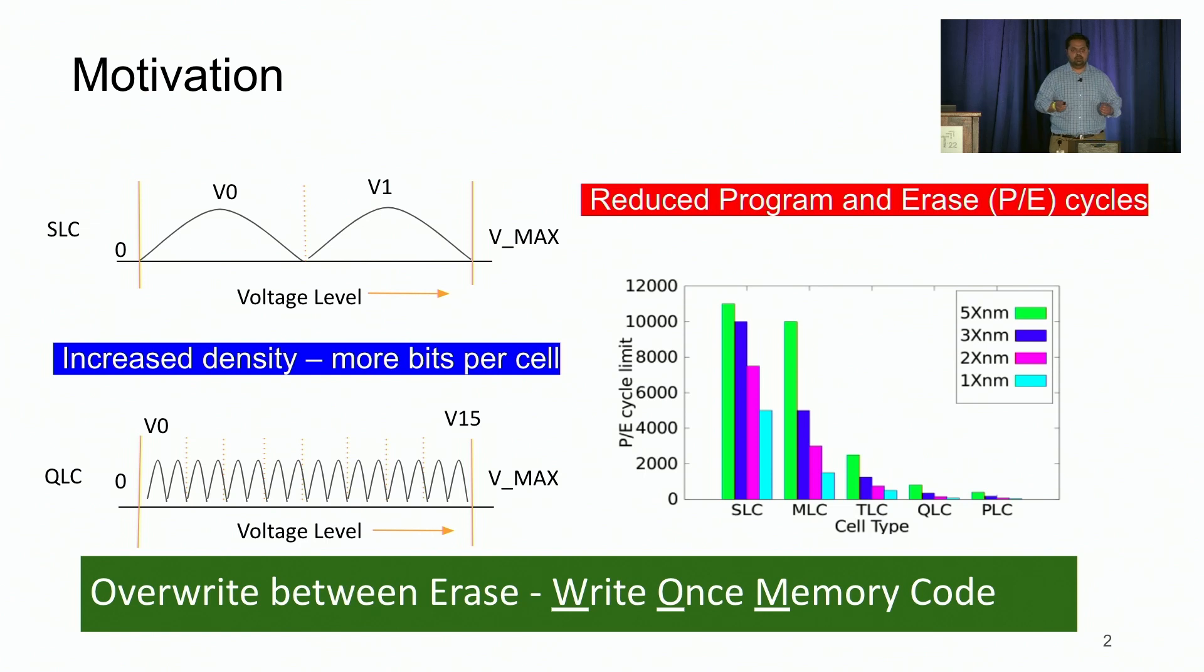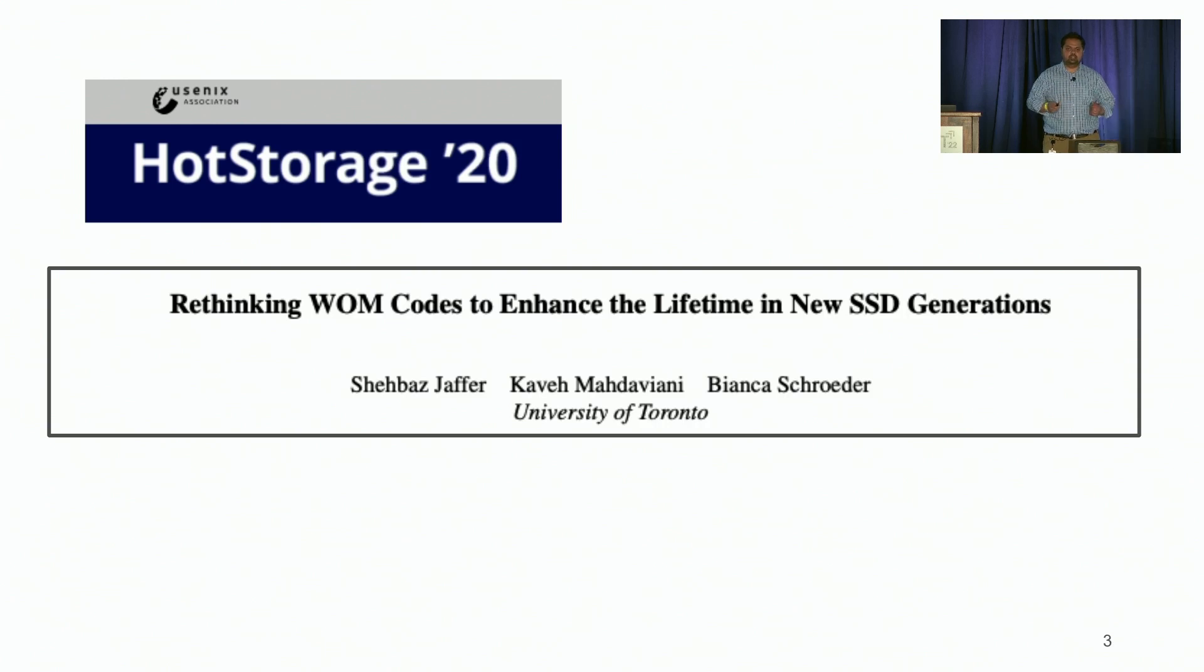One way to alleviate this problem is to do multiple overwrites between successive erase operations such that on each write, voltage is monotonically increased. And one way to achieve that is by using write-once memory codes or WOM codes. In our previously published workshop paper at HotStorage20, we introduced the notion of voltage-based WOM V codes.